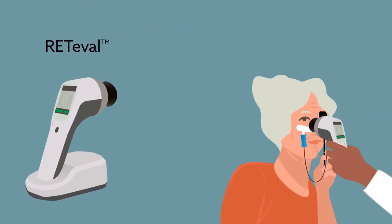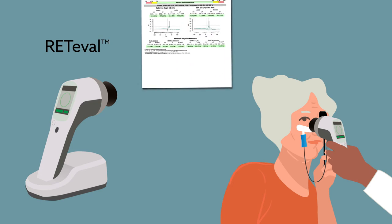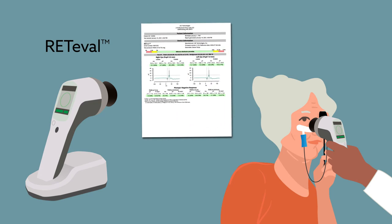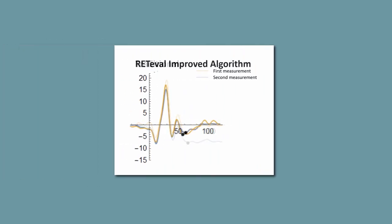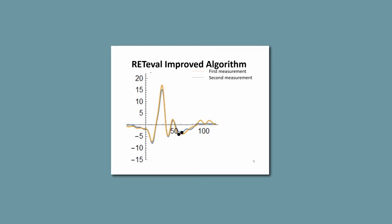The RETeval handheld device uses skin electrodes, needs no dilation, and provides color-coded test results to comfortably evaluate ERG results. To address test-retest variability, the RETeval team has recently developed a new algorithm that offers as much as five times better test-retest variability to objectively detect and monitor glaucoma patients.